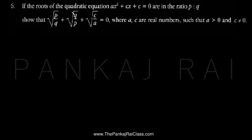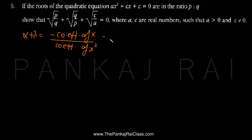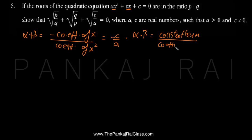Let us begin. Let us assume that the roots of this quadratic equation are alpha and beta. We know that the sum of roots, alpha plus beta, is given by minus the coefficient of x upon coefficient of x², so that would be minus C upon A. So alpha plus beta equals minus C by A. We also know that the product of roots, alpha times beta, is given by the constant term upon coefficient of x², which is C by A.